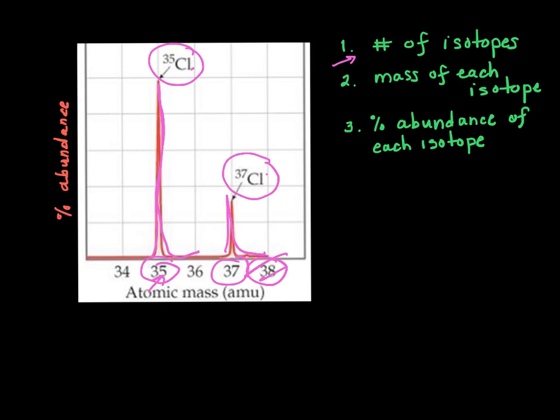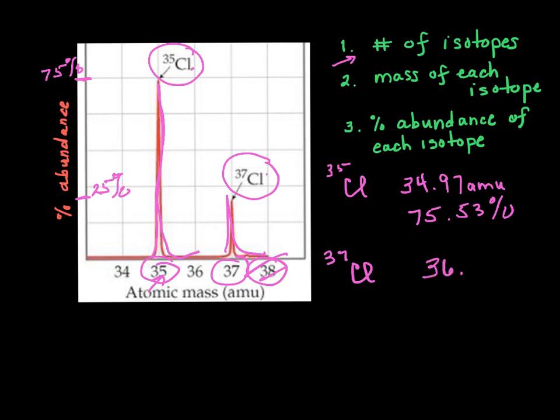It also gives us the percent abundance of each isotope. This one is much taller than this one because this is about 75% chlorine-35 and only about 25% chlorine-37. If we look at the actual numbers for chlorine-35, it would give us the data of the mass is 34.97 amu, and it is 75.53%. And chlorine-37 has a mass of 36.97 amu, and 24.47%.